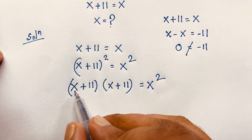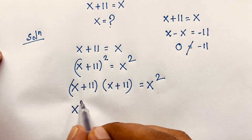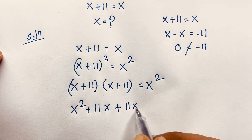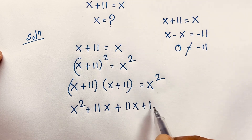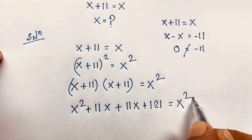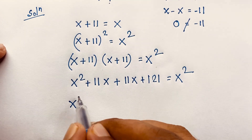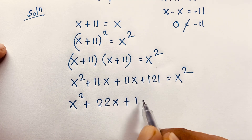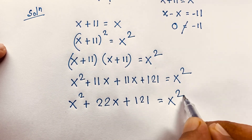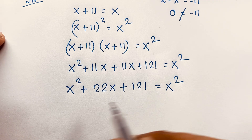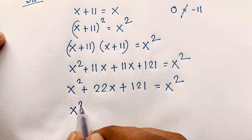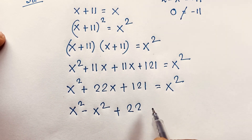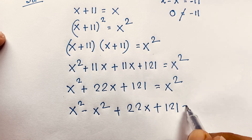x times x it will be x squared, then x times 11 it will be 11x, then 11 times x it will be 11x, and 11 times 11 it will be 121, all equal to x squared. So 11 plus 11 it will be 22x plus 121. Now I move this x squared to this side — it will be x squared minus x squared, so 22x plus 121 is equal to 0.